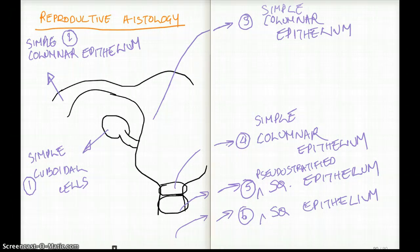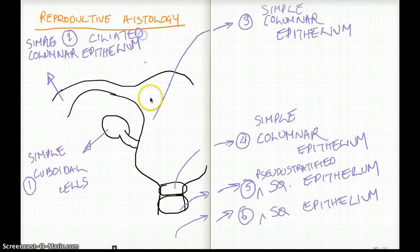Now, my next question is, are any of these cells ciliated? Yes, there is one section in this reproductive histology which is ciliated, and I'm sure you are screwing in your mind what that is. It's going to be our fallopian. So this is going to be simple ciliated columnar epithelium.